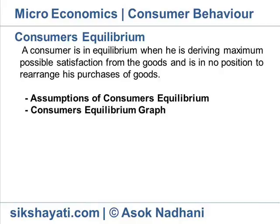Assumptions of Consumers Equilibrium. The consumer has different selections for various combinations of goods X and Y, obtaining the same amount of satisfaction. He has a fixed money income which he has to spend wholly on goods X and Y. Prices of goods X and Y are fixed.